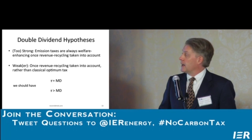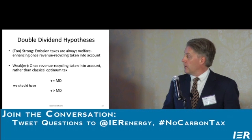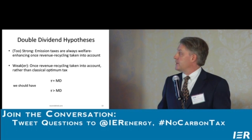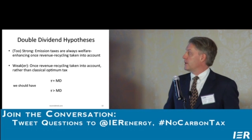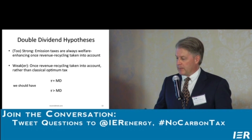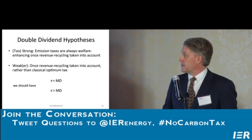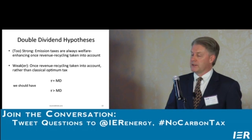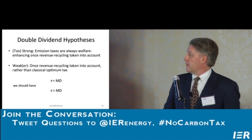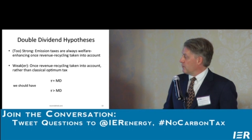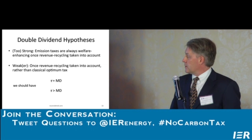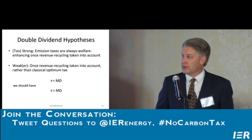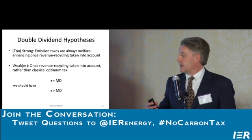The double dividend hypothesis came out in a couple of different forms in the 1990s. There was an overly strong or overly optimistic version, which held that emission taxes are always welfare enhancing, no matter the circumstances. But there are obvious flaws with that reasoning — emission taxes aren't always welfare enhancing, especially if you overshoot the optimum. The weaker version was that once revenue recycling is taken into account, we should revisit the classical rule of setting the tax equal to marginal damages and instead set the tax higher than the social cost of carbon, to account for the double dividend argument.